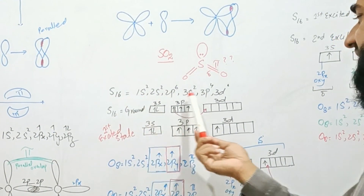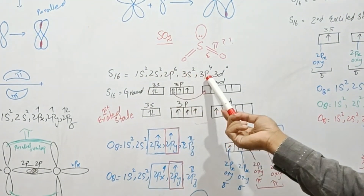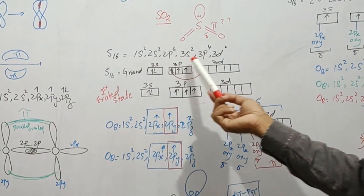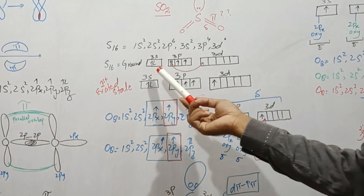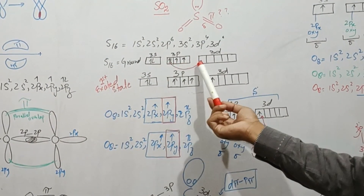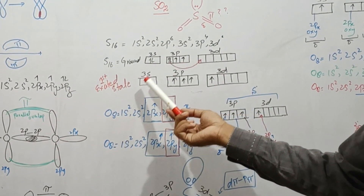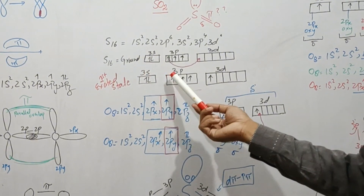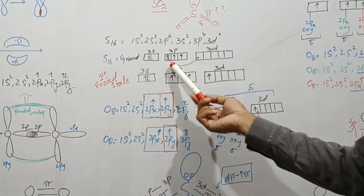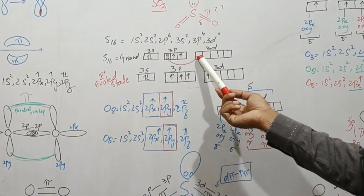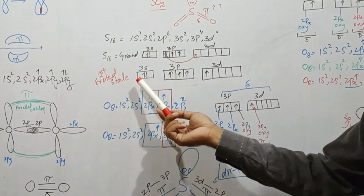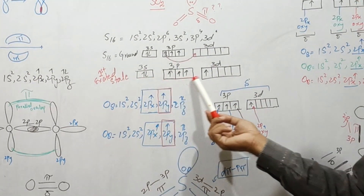We can also write the ground state configuration in another way. In the first excited state, one electron from 3p jumps to the vacant 3d orbital and we get the first excited state of sulfur.